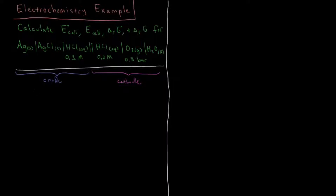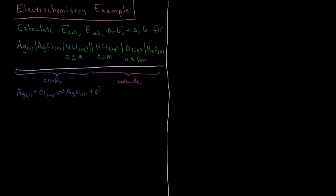At our anode, the half-cell reaction which occurs is a bit complicated — notice there are three bars here. But if we write it as an oxidation as it would occur at the anode, we have solid silver plus an aqueous chloride ion from the HCl, reacting to form silver chloride, which gets oxidized to produce an electron.